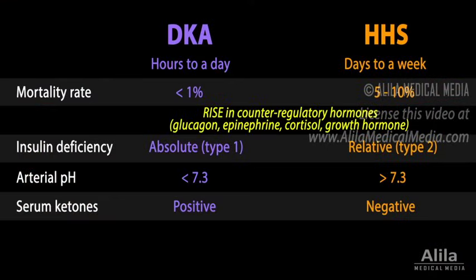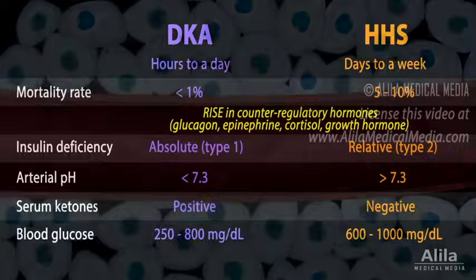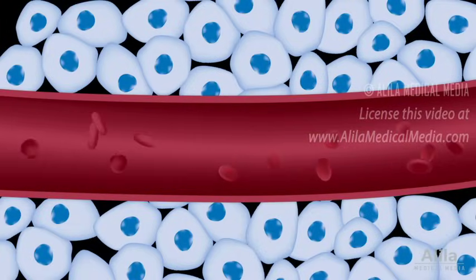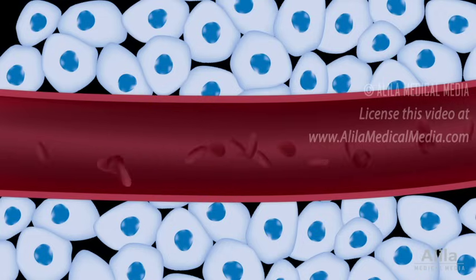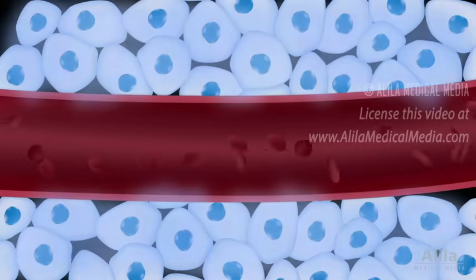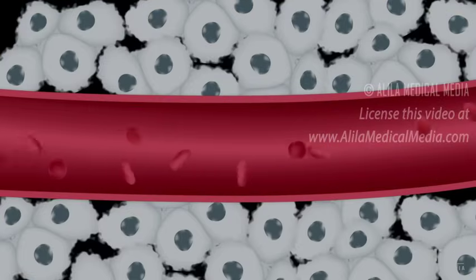Because symptoms of acidosis are not present, development of HHS may go unnoticed until blood glucose levels become extremely high. Severe dehydration results in increased concentrations of solutes in the blood, raising its osmolarity. Hyperosmotic blood plasma drives water out of the body's tissues, causing cellular dysfunction.